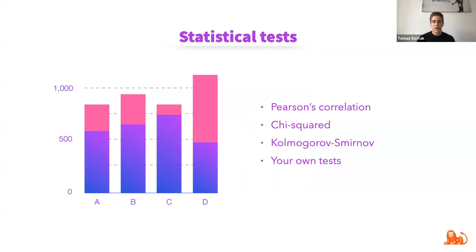We apply a bunch of statistical tests — Pearson correlation, chi-squared, Kolmogorov-Smirnov, and many more. We've also implemented additional tests from different papers, and we've made implementing your own custom test very easy and intuitive in our package, so you can try your favorite statistical tests as well.